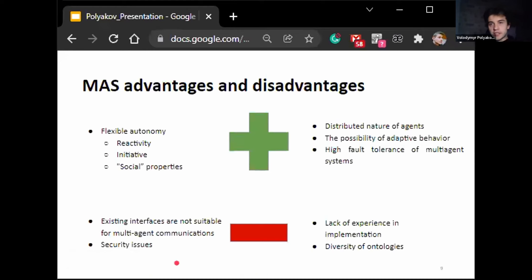On top of that, multi-agent systems provide us with distributed nature of its agents, the possibility of adaptive behavior, and high fault tolerance of multi-agent systems due to its distributed nature.